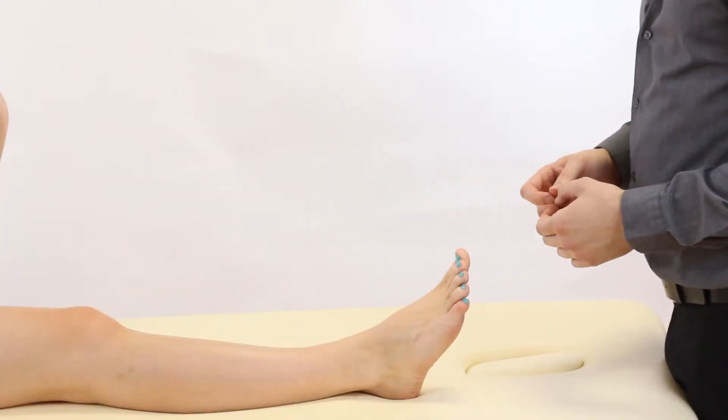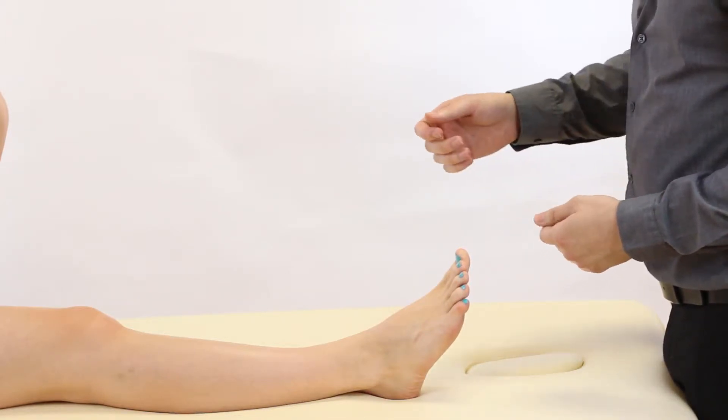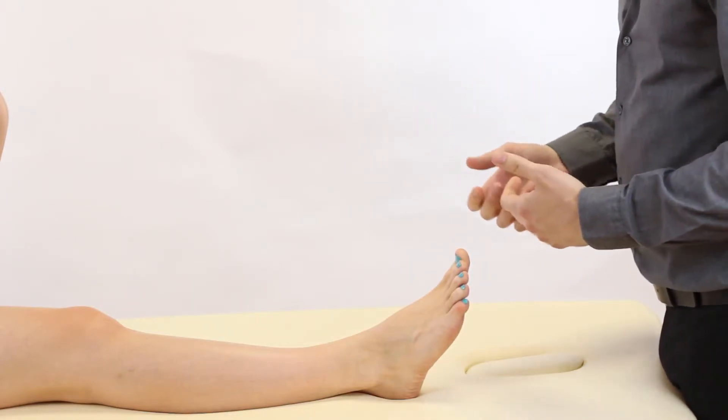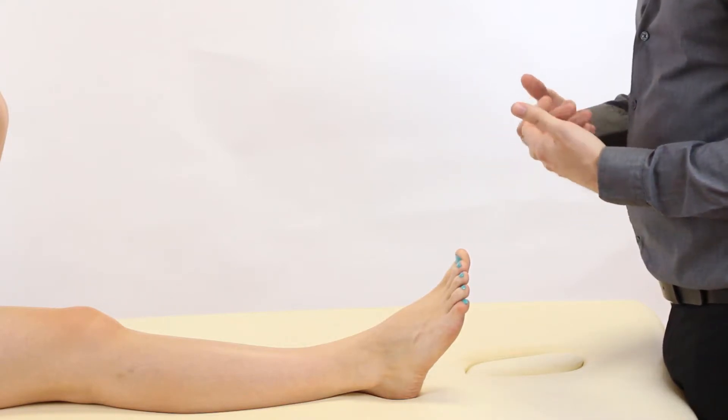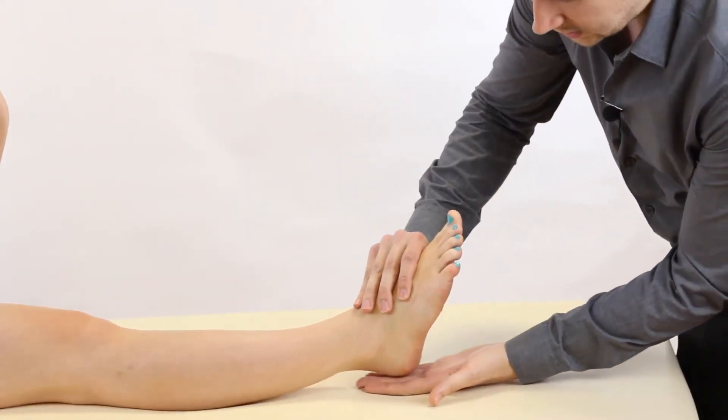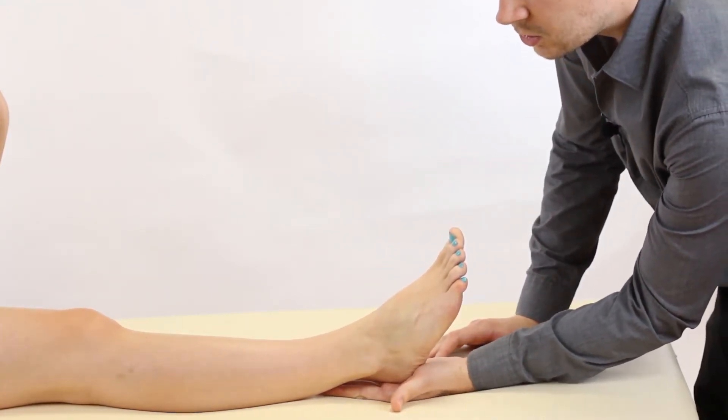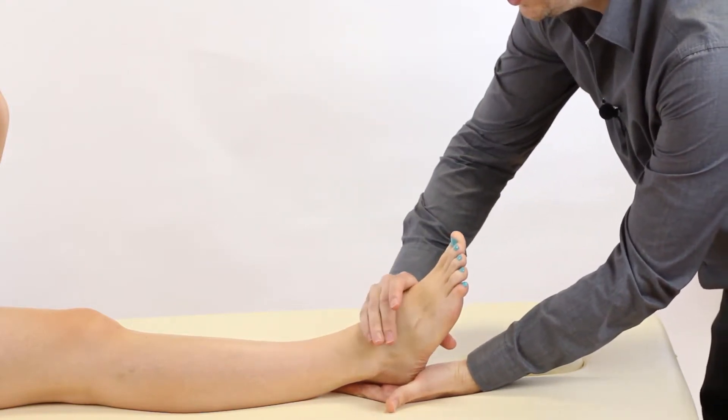Next we're going to look at passive range of motion of the ankle into eversion which articulates around the subtalar joints. Our patient once again is going to be in supine or long sitting and as a therapist we're going to stand at the end of the bed. We're going to once again cup underneath the calcaneus securing that heel bone and with our pac-man grip we're going to reach across and secure the tarsals.